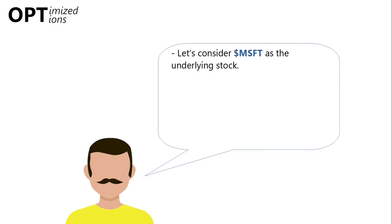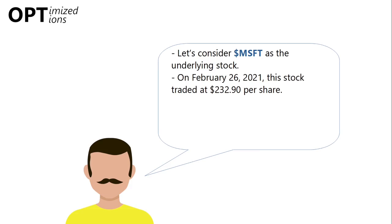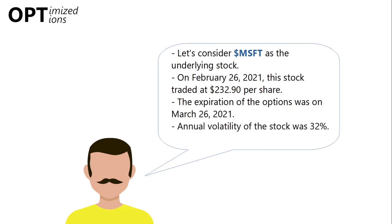Now let's take a look at a numerical example of a Batman spread using Microsoft's stock as our underlying asset. On February 26, 2021, this stock traded at $232.90 per share. The expiration of the options was on March 26, 2021 — that is, 28 days later. The annualized volatility of the stock was 32 percent. In the Black-Scholes calculations, the risk-free interest rate was 0.03 percent, corresponding to the yield of the Treasury bond. This is the theoretical rate of return of an investment with no risk; in practice, however small the risk, it is not strictly zero.